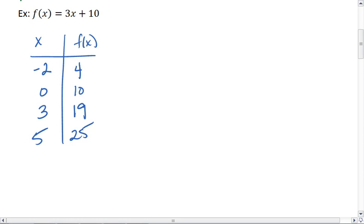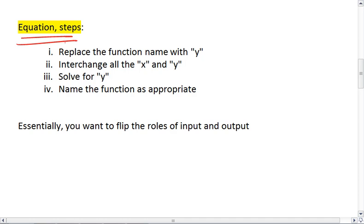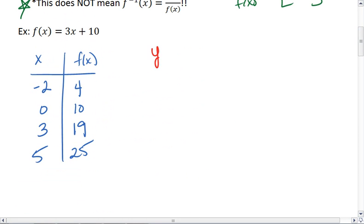But let's say we want to reverse the process. Well, this is when we want to find the inverse. And there are steps to finding the inverse. First, replace the function name with a y. Okay, so we write y equals 3x plus 10.